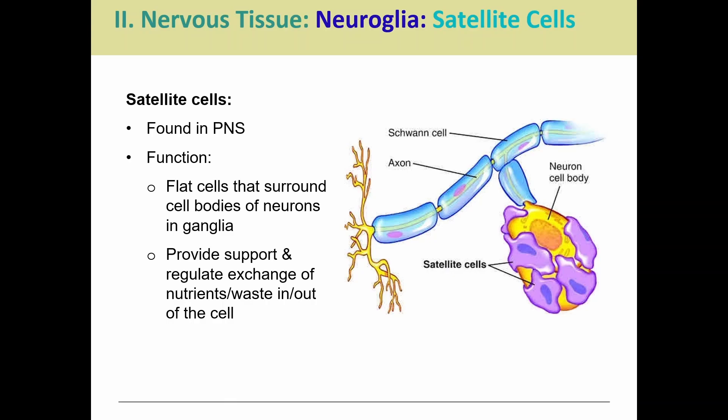Moving on to the peripheral nervous system, we get to our two types. We have satellite cells, which kind of engulf the cell body — they're flat little cells that just surround the cell body. They're going to help provide support and help with the exchange of nutrients and waste, kind of just helping with the movement of things in and out of the neuron.